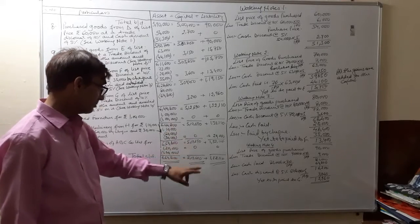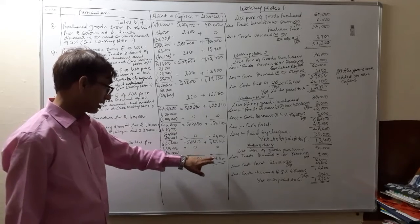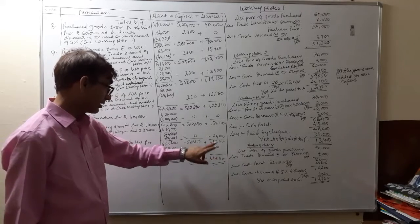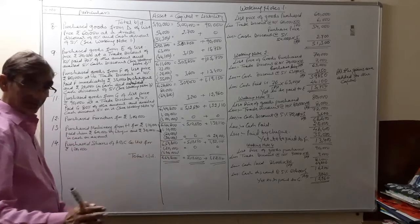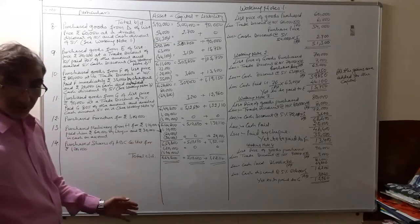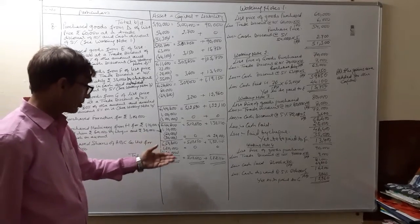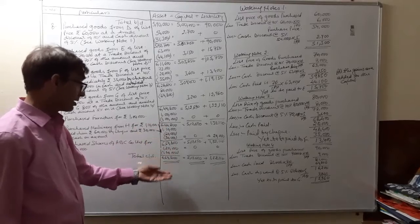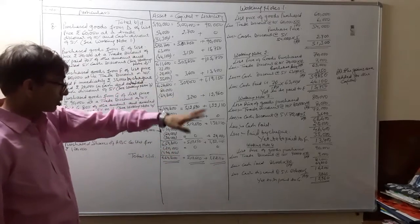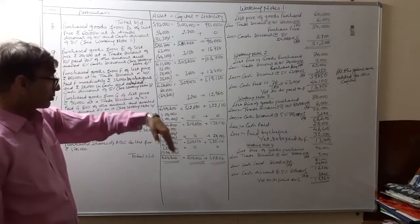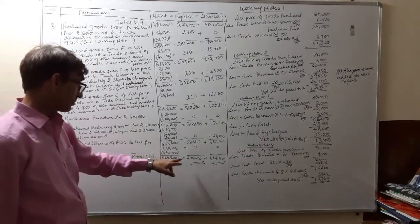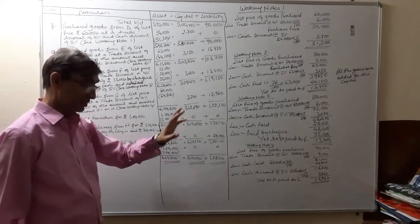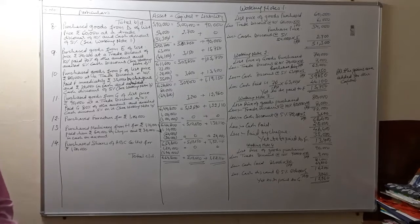The final accounting equation: assets 6 lakh 64,800 equals capital 5 lakh 12,690 plus liabilities 1 lakh 52,110. The page ends here. Tomorrow we will start with a new page, and this will be the opening balance carried forward.